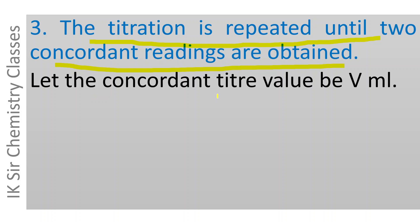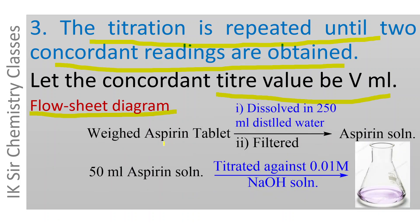Let the concordant titration value be V mL. These steps have been represented with the help of a flow sheet diagram. The aspirin tablet is weighed, dissolved in distilled water, and filtered to get a clear 250 ml aspirin solution. 50 ml of this aspirin solution is titrated against 0.01 M NaOH solution using phenolphthalein as indicator, and the end point is when the color of the conical flask contents is just light pink.